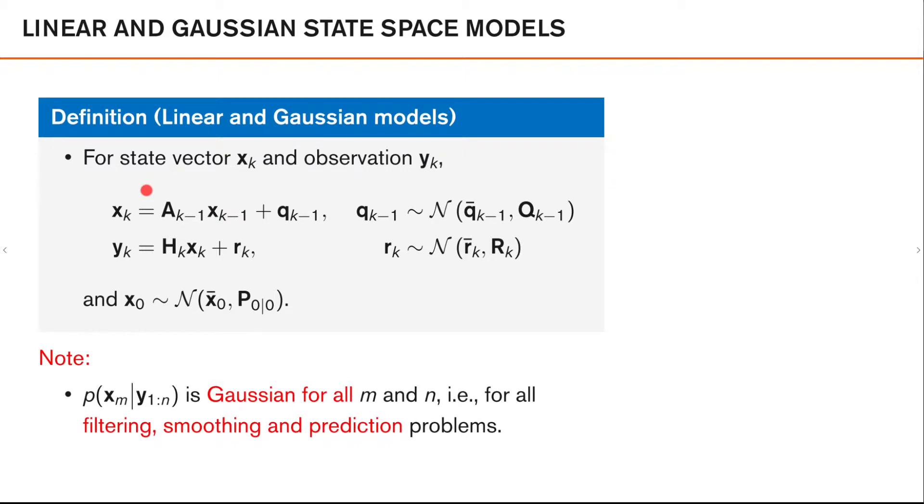So, mathematically, we define the linear and Gaussian models like this. So, for a state vector x_k and an observation y_k,